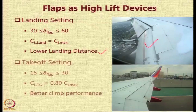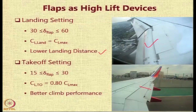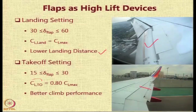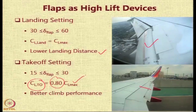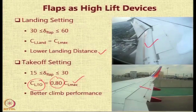During takeoff, the flaps are deflected at a lower angle. The deflection angle of flaps during takeoff is typically 15 to 30 degrees. One can assume that the CL at takeoff is going to be 80% of CL max because the flap deflection is at a lower angle, and the purpose of using flaps during takeoff is to have better climb performance.